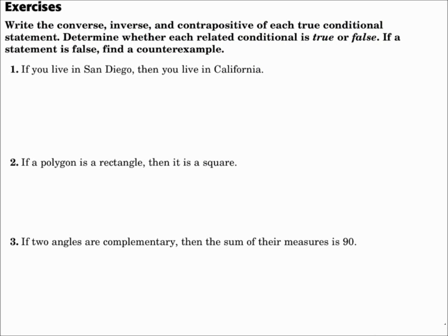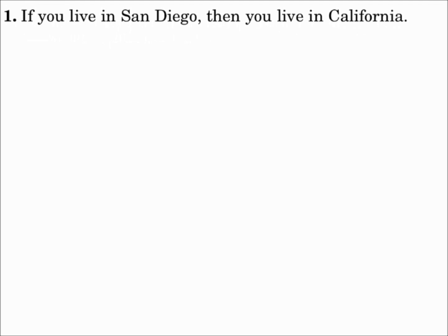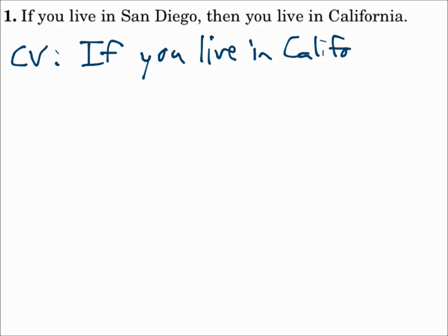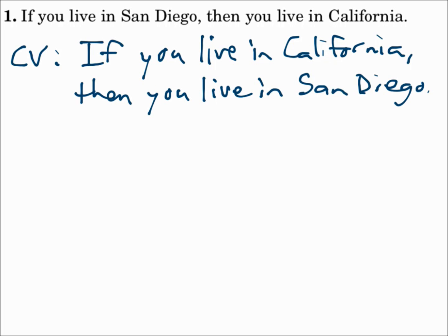Write the converse, inverse, and contrapositive of each true conditional statement and determine whether each is true or false. If false, find a counterexample. Number 1: If you live in San Diego, then you live in California. The converse (CV) flips it: if you live in California, then you live in San Diego. That's false — you could live in LA.